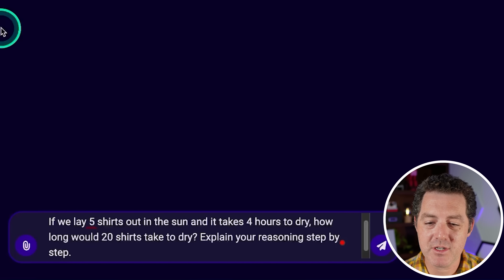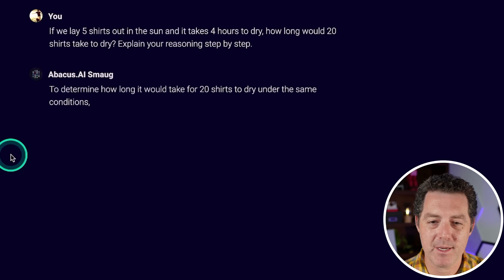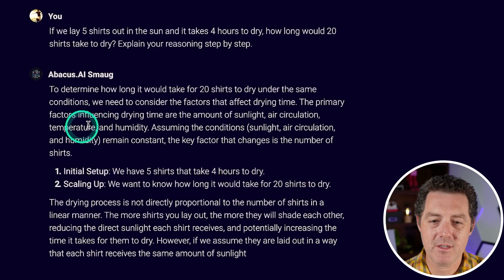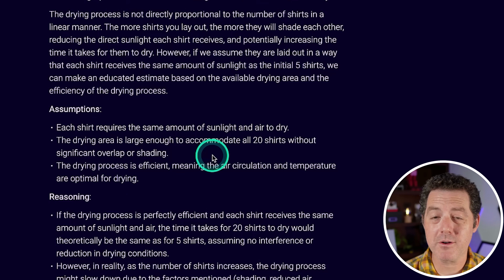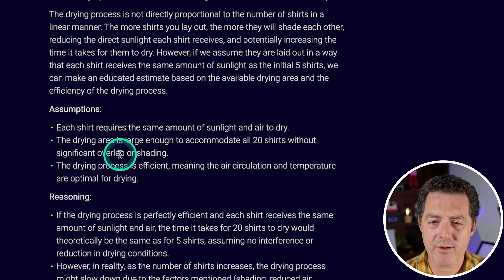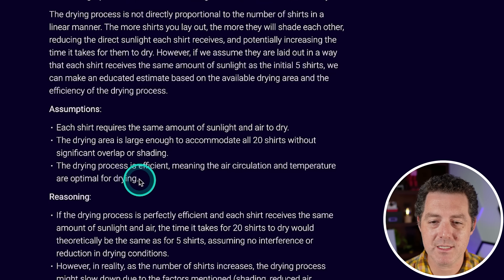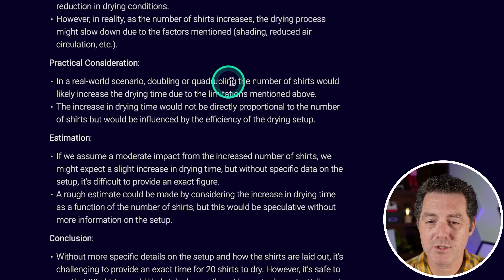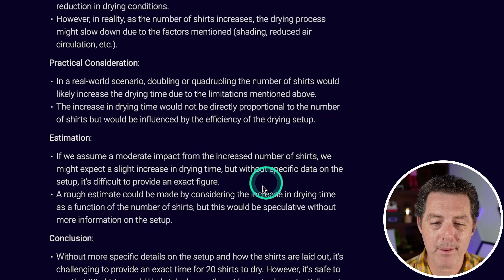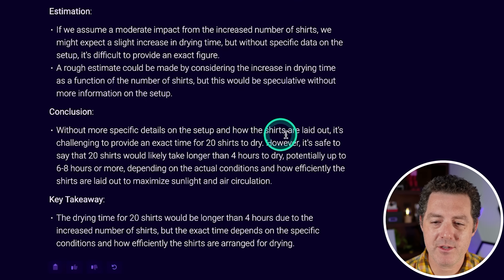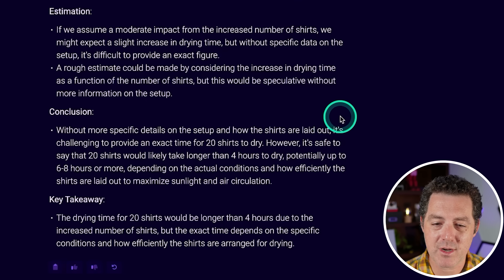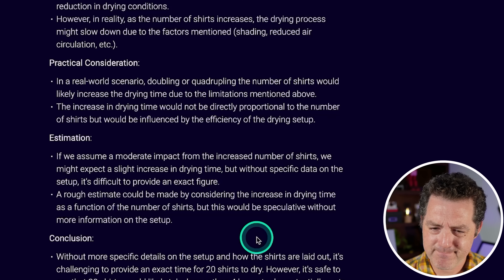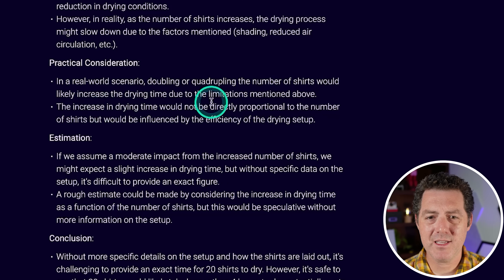Now the shirts drying problem. If we lay five shirts out in the sun and it takes four hours to dry, how long would it take 20 shirts to dry? The 70B model gave a very verbose answer. It said that in a real world scenario, doubling or quadrupling the number of shirts would likely increase drying time. The conclusion was that 20 shirts would likely take six to eight hours more — that's not really right at all. That's going to be a fail.